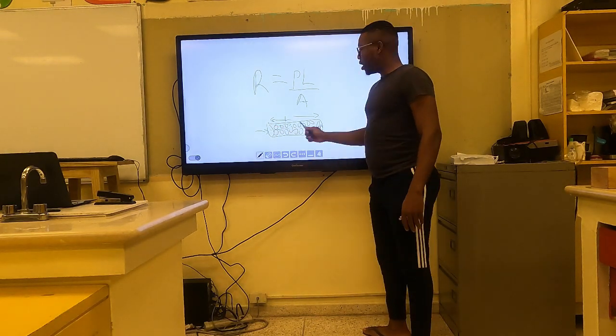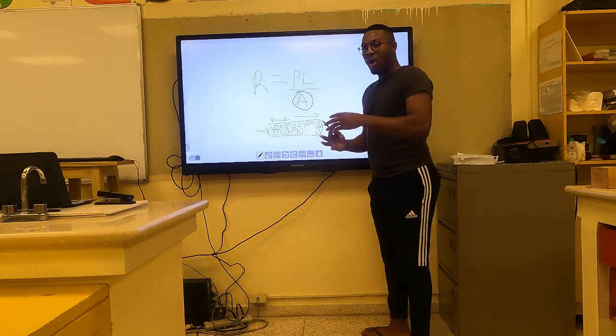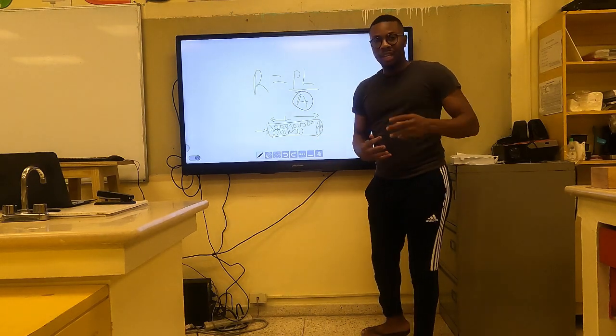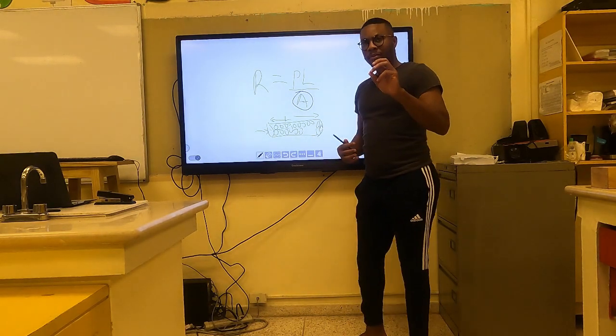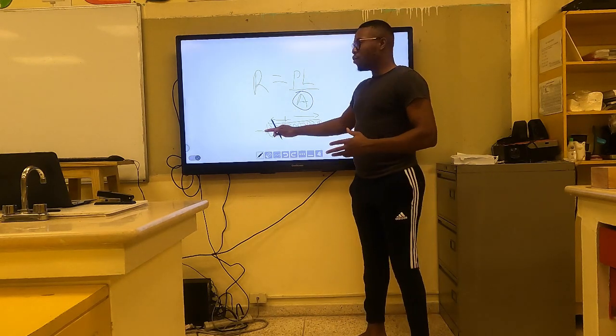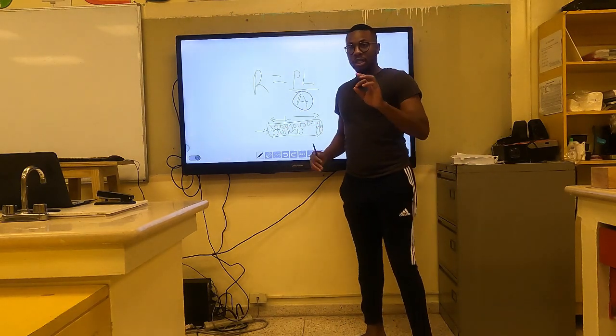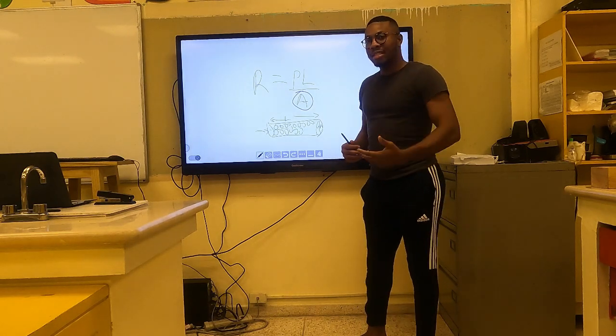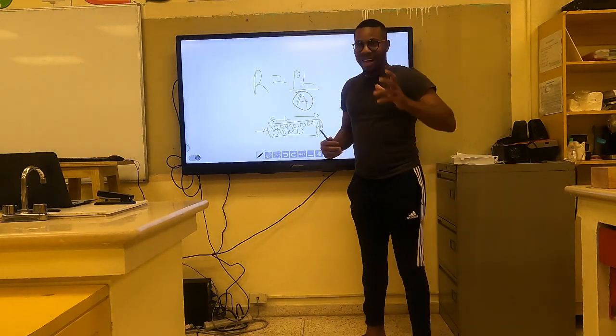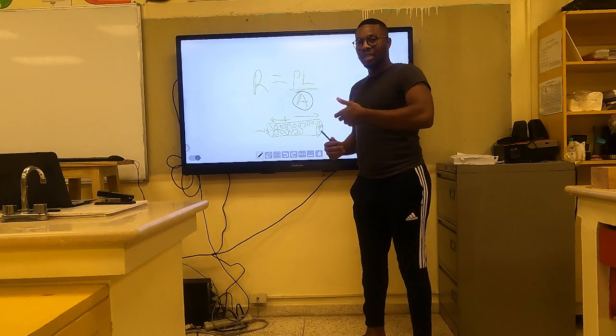In terms of the cross-sectional area, if we make the wire much bigger, that wire will have enough space for more electrons to flow through. There won't be as much resistance because there is more space in that cross-sectional area where electrons can flow.